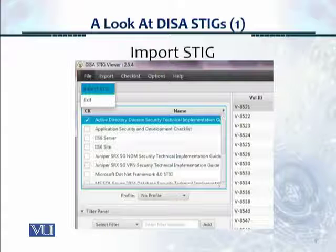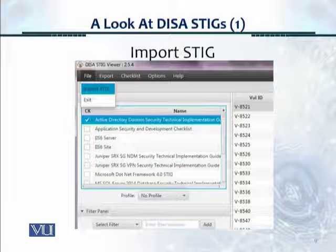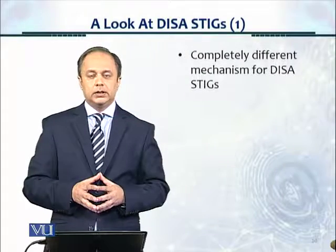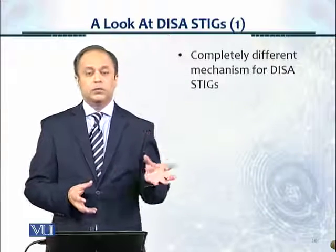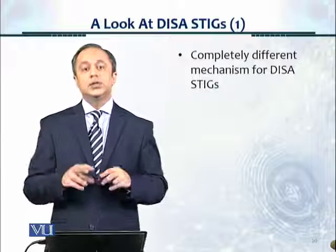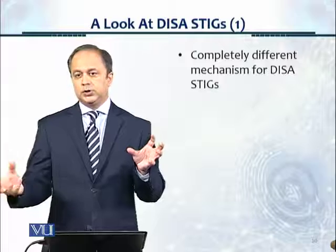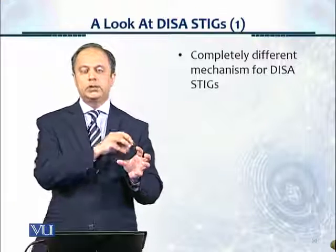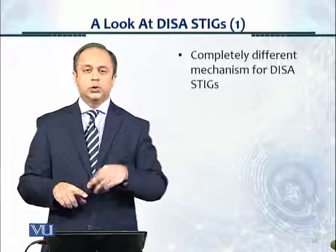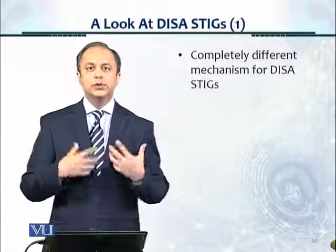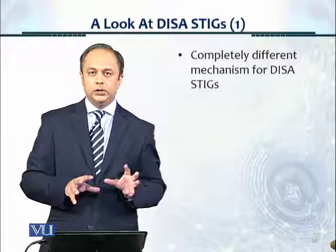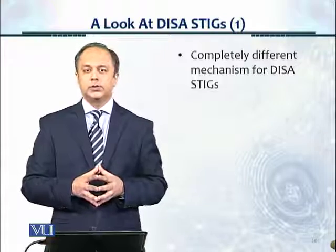You import the STIG by going to File and Import STIG; it then asks where you want to pick up the file from, and you navigate to the drive or folder on your workstation and it opens the STIG for you. As we can see, there's a completely different mechanism for CIS, which is in the form of PDF files, whereas DISA has a STIG viewer — a Java file — and STIGs which are zip files that you import into the viewer. It takes a little time to get used to the STIG viewer, and we'll look at those in the next sections. Thank you.